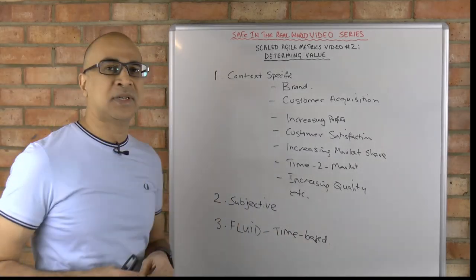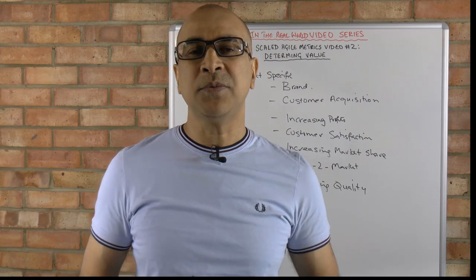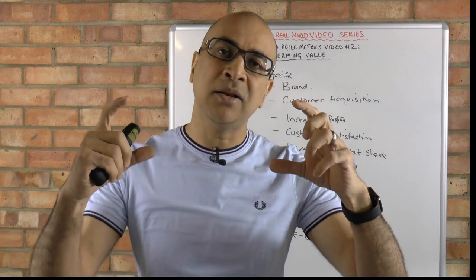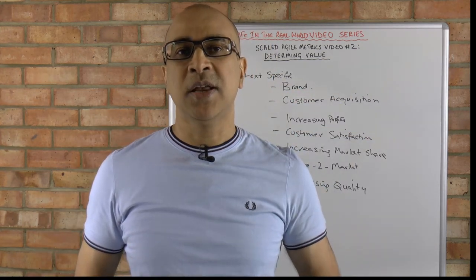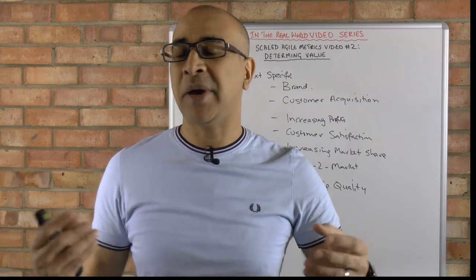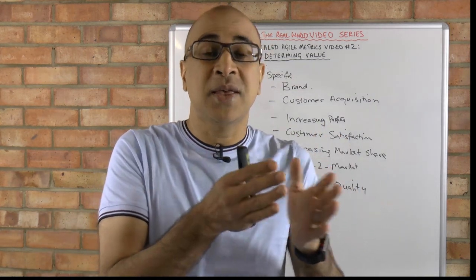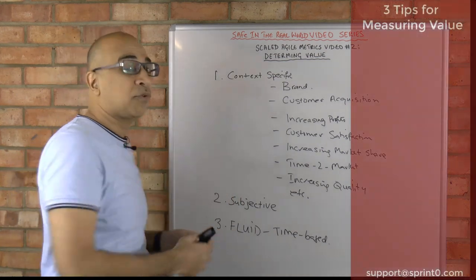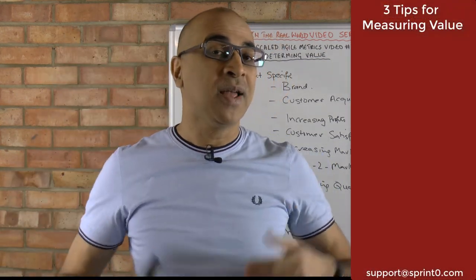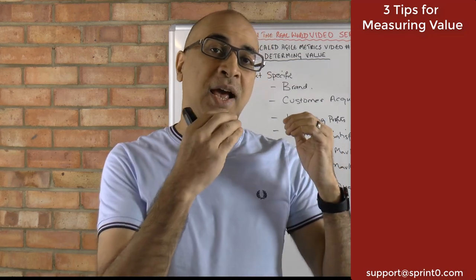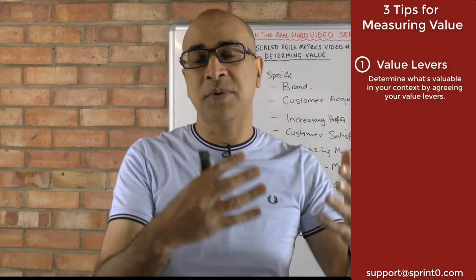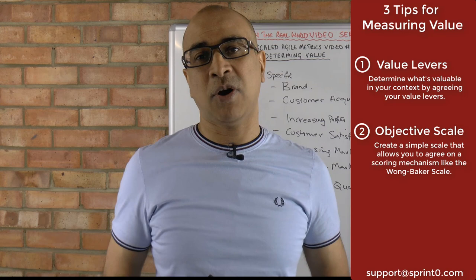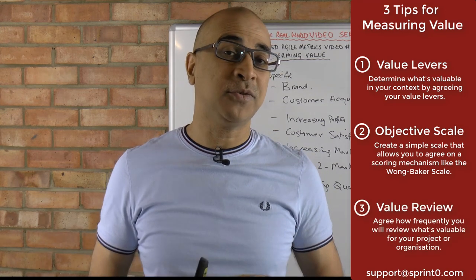Finally, there's the time-based issue, which is relatively easy to address. The question is: how frequently do we need to revisit our scale and the levers we've determined? If we do it too frequently, we don't have a baseline to compare against. If we do it too infrequently, what's valuable may have changed over time. So there you have it — three challenges and three tips to help solve them: how to deal with value being context-specific, how to manage subjectivity, and how to manage time sensitivity.